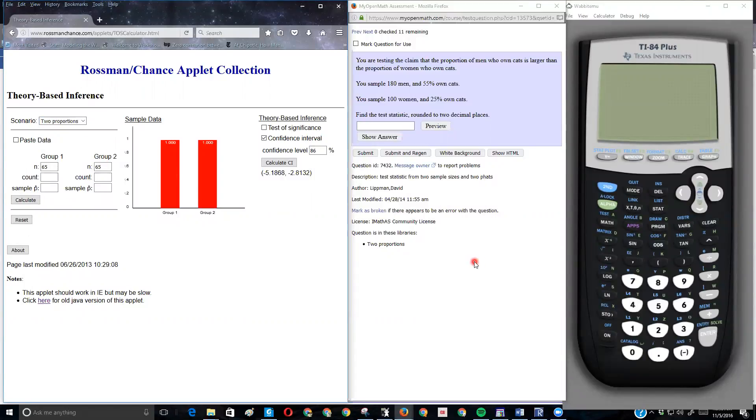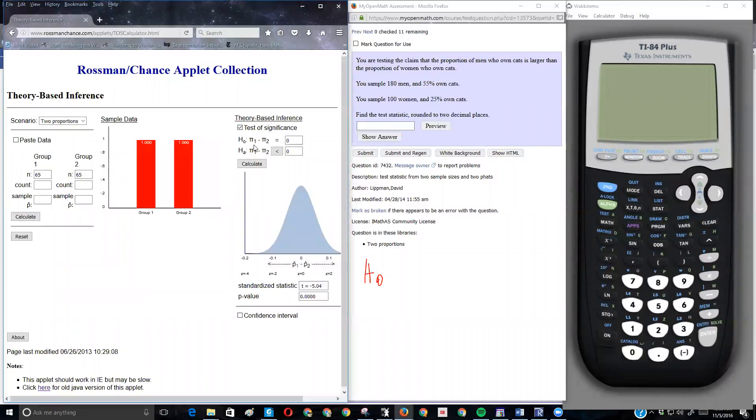I've got to think about what's the claim. The claim is that the proportion of men who own cats is larger than the proportion of women who own cats. I can do this right on Rossman Chansa, so I encourage you to write this down. I'm going to do a test of significance.